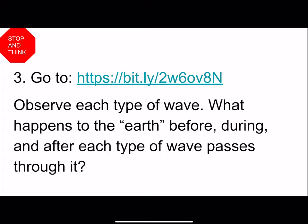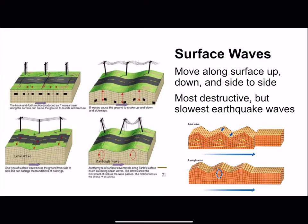Now I'd like you to stop and think again. Seismographs have also given us insight into the different types of waves created by earthquakes. Please take a moment to go to this website here and look at animations of each type of wave. Make some observations about how the particles simulating the Earth behave before, during, and after the wave passes through them. Earthquake waves occur in four types, which can be categorized as either surface waves or body waves.